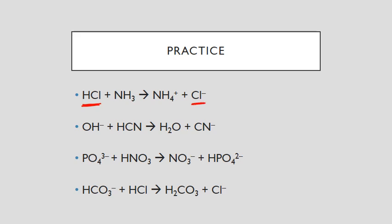HCl is losing a hydrogen — donating a hydrogen — to form Cl⁻, the chloride ion. Which means HCl is an acid, and its partner, what it's forming, is the conjugate base. Now if I look at the other part of my reaction, I have NH₃ as the reactant, and its partner is NH₄⁺. Going from NH₃ to NH₄⁺, it had to gain a hydrogen. So NH₃ gained a hydrogen, making it a base, and the thing it formed — NH₄⁺ — is the conjugate acid.